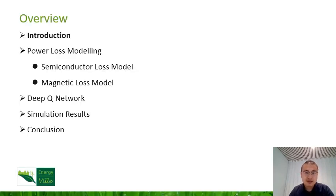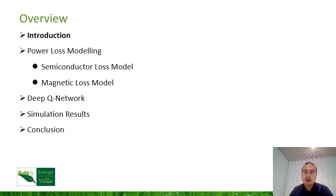In this presentation, I will start with a brief introduction about design automation of power electronics, and then I will explain the details of power loss modeling for converters, including the semiconductor loss and magnetic loss. After that, I will introduce the Deep Q Network, which is one of the reinforcement learning algorithms.